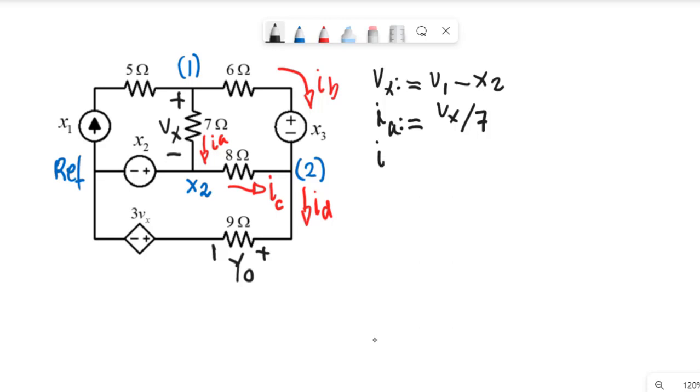And the current Ib is V1 minus V2 minus the source X3 divided by 6. That is the current Ic, is X2 minus V2 divided by 8.